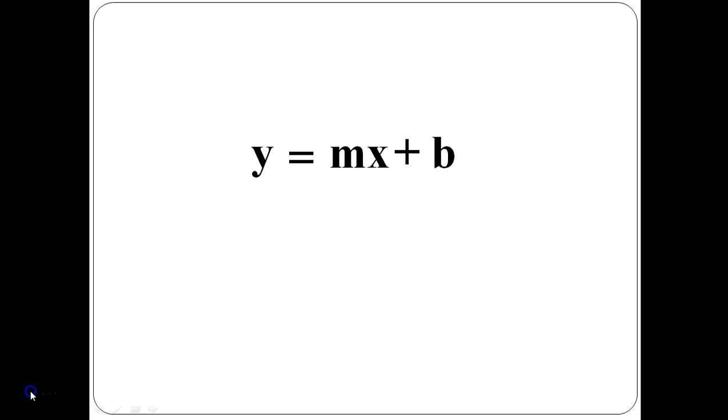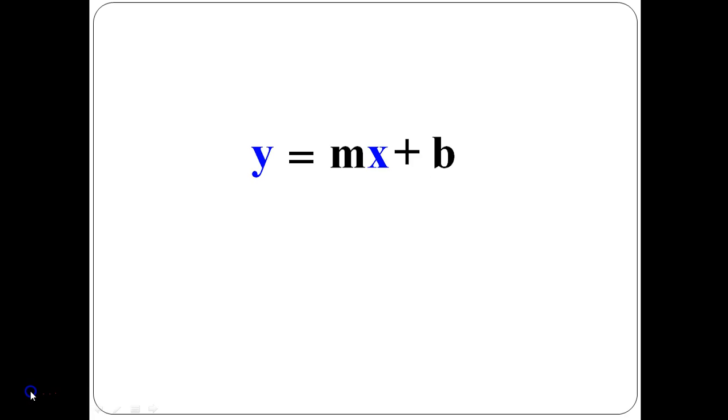They're most commonly written in the form y equals mx plus b. Y and x are the variables. X is the independent variable and y is the dependent variable. What the y value becomes depends on what x value we substitute into the equation. They will remain x's and y's in the equations because they can be equal to any real numbers. That's why they're called variables - their values can vary.